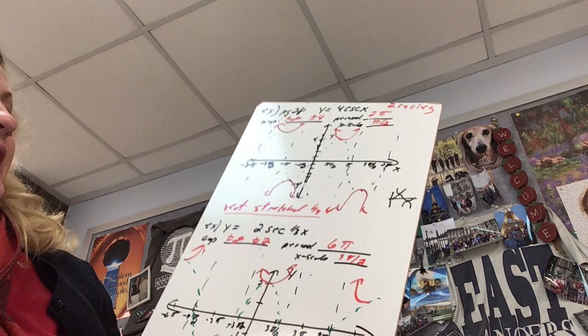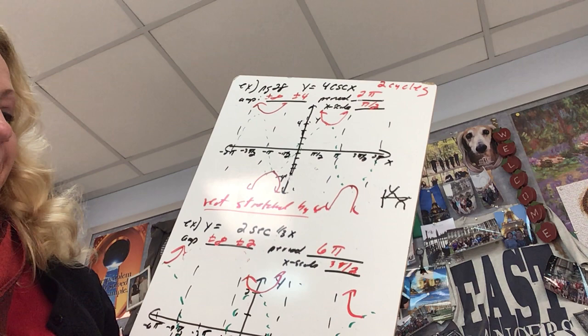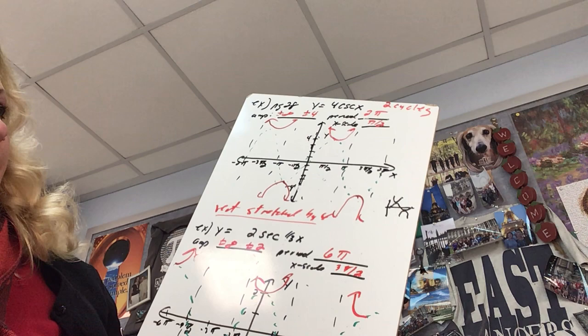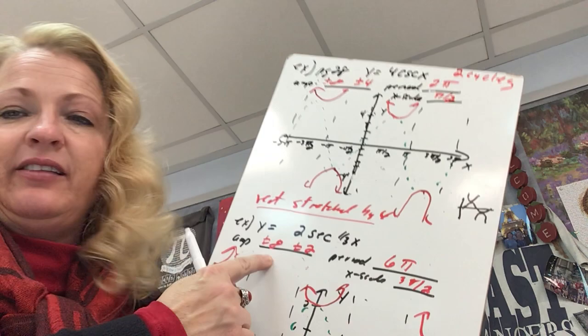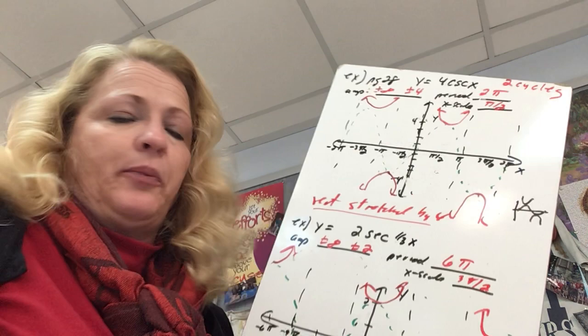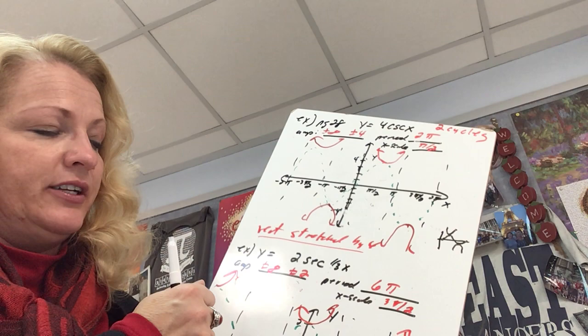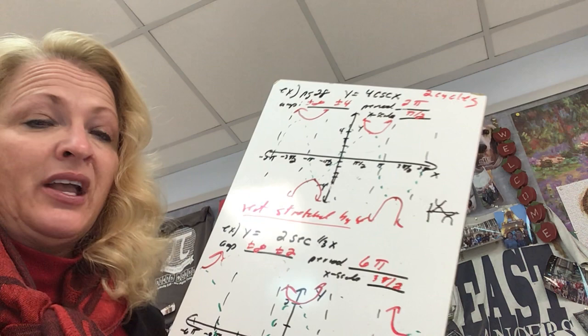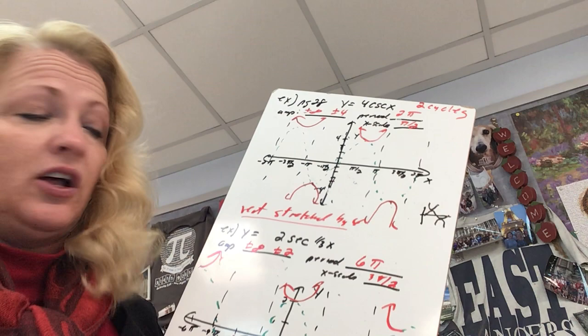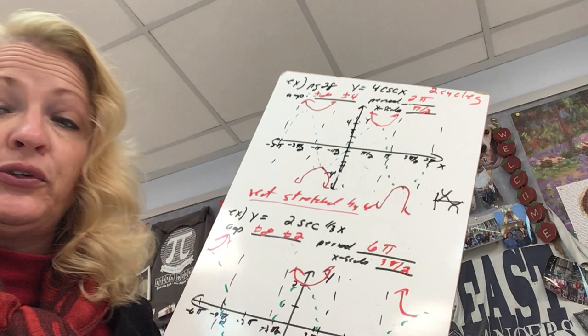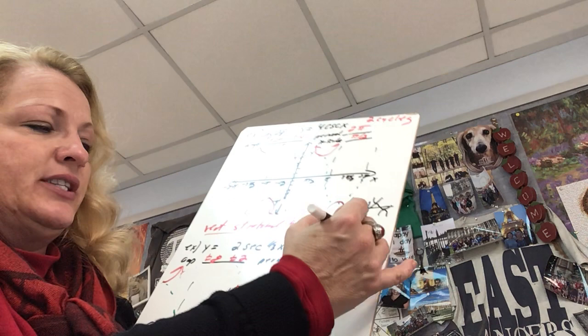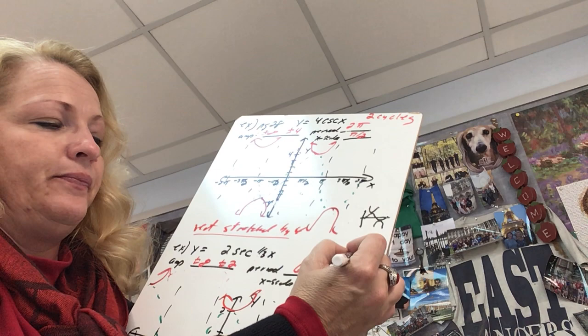Next example: y equals 2 secant of (1/3)x. We list our amplitude, period, and x-scale. The amplitude is technically infinity, but key points — relative maxes and mins — are at plus or minus 2. The period is two pi divided by one-third, which is 6 pi, so this cycle is three times as long as the parent graph. Taking 6 pi divided by 4 gives an x-scale of 3 pi over 2, meaning we count by 270 degrees.